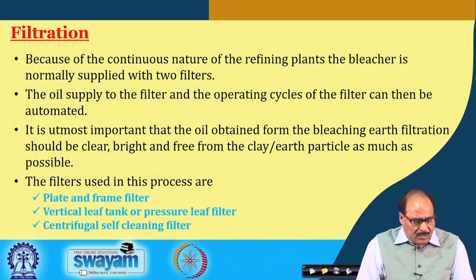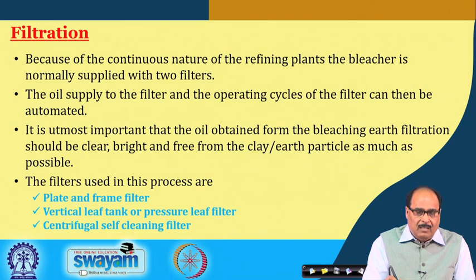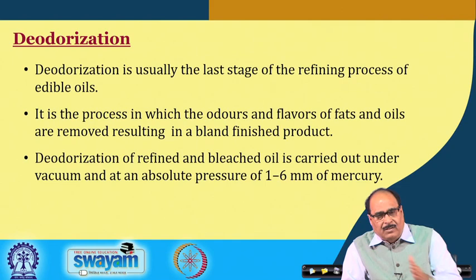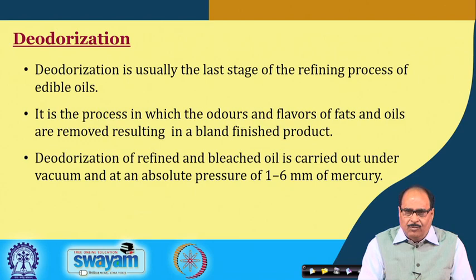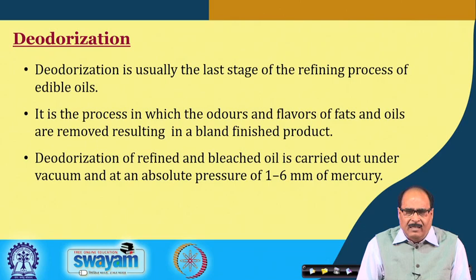Generally used filters in oil refining plants include plate and frame filters, vertical leaf tanks or pressure leaf filters, and centrifugal self-cleaning filters. The filtered oil is then passed to deodorization. Depending on the manufacturing schedule, after bleaching the oil may be diverted to product manufacturing for hydrogenation, winterization, or other processes. For frying or cooking oil, it is normally sent to the deodorizer.